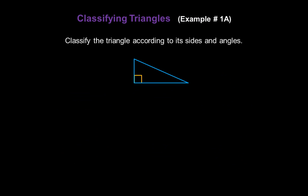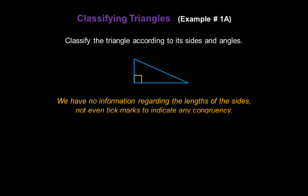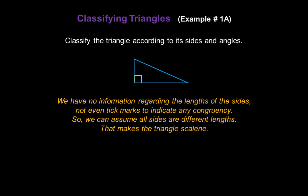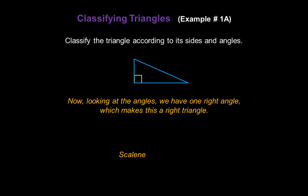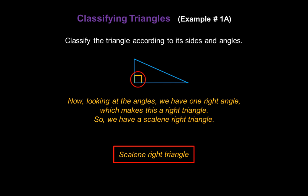Now let's take a look at some examples. Classify this triangle according to its sides and angles. We have no information regarding the lengths of the sides — not even tick marks to indicate any congruency — so we're going to assume that all sides are different lengths. A triangle with different length sides is called a scalene triangle. Now looking at the angles, we have one right angle, making this a scalene right triangle. You can also swap the words and call it a right scalene triangle — both are the same.